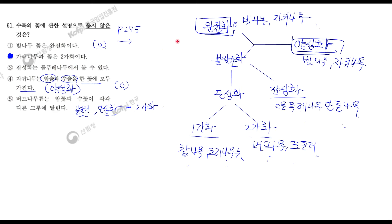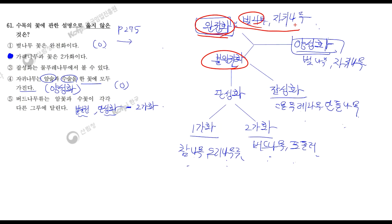자 보겠습니다. 제가 이제 설명하는 방법은 좀 다를 수도 있으니까요. 먼저 완전화와 불안전화를 분류하십시오. 완전화는 무엇이냐? 꽃잎, 꽃받침, 암술, 수술을 모두 가지고 있는 것을 보고 완전화라고 합니다. 대표적으로 벚나무와 자귀나무가 있겠죠.